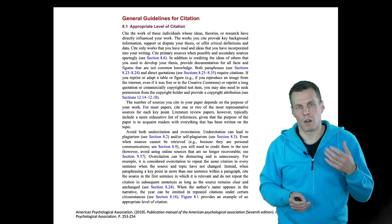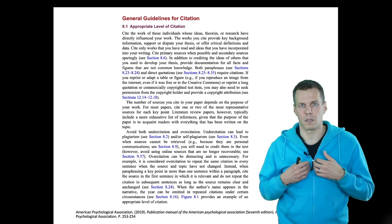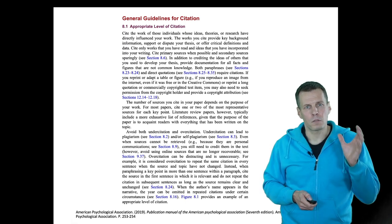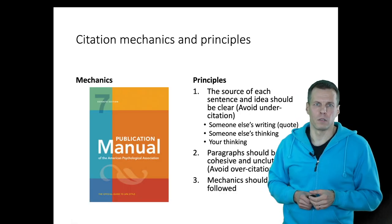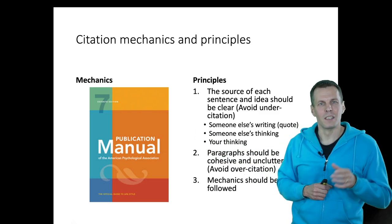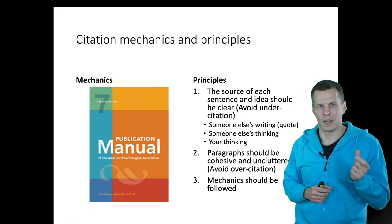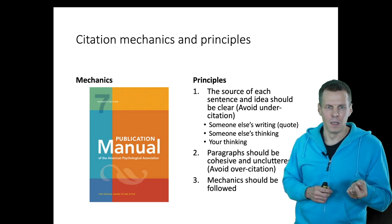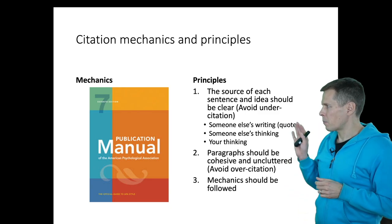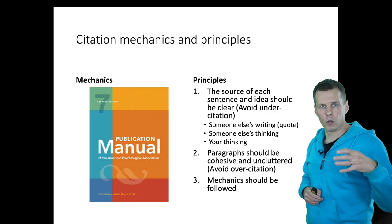Over-citation is a problem because it reduces readability. If your text is just a long string of citations, it becomes very difficult to read. I have seen introductions with 130 citations, and I asked the authors to make it lighter. There are two things to understand about citations: mechanics and principles. The APA Publication Manual has a full chapter on citation mechanics explaining how to cite every possible type of source. And then there are principles, which are much more important.